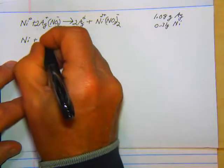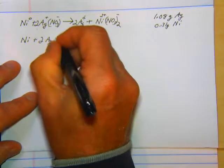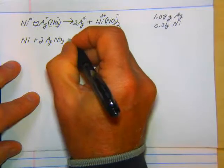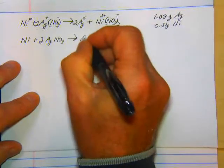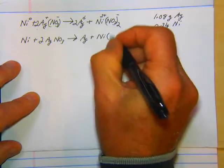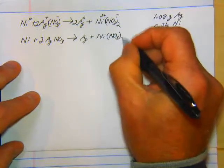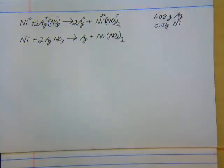Ni + 2AgNO₃ → 2Ag + Ni(NO₃)₂. At this point, we can go right through the problems. Part A says write a balanced equation for the reaction. Which we did.